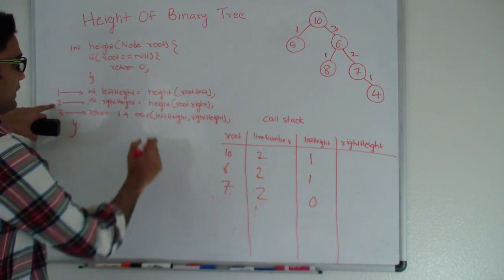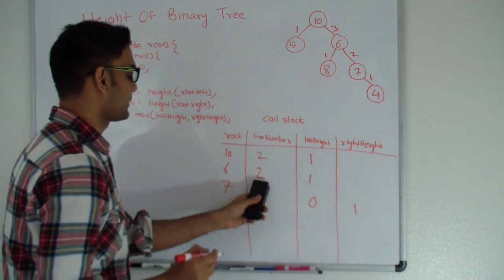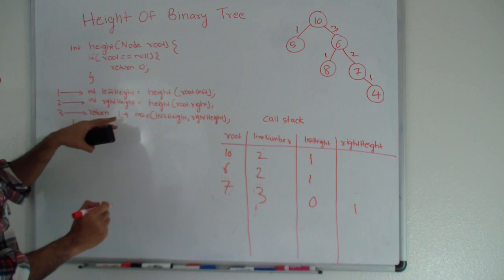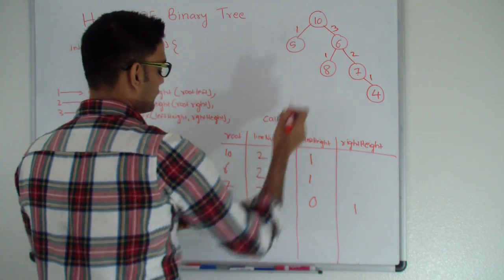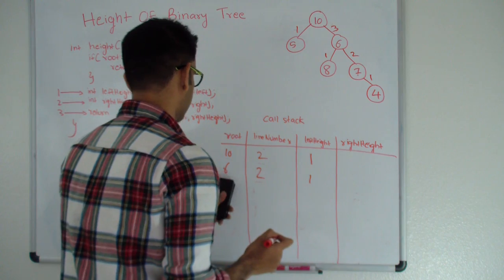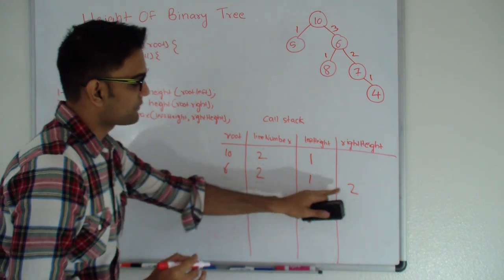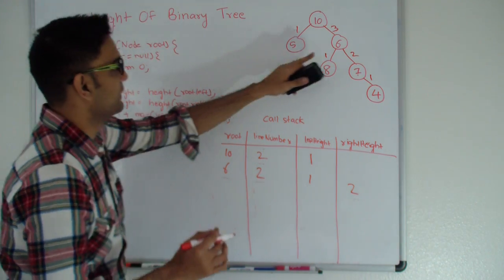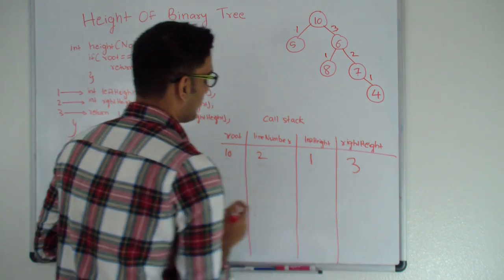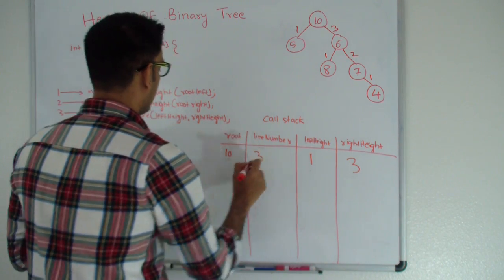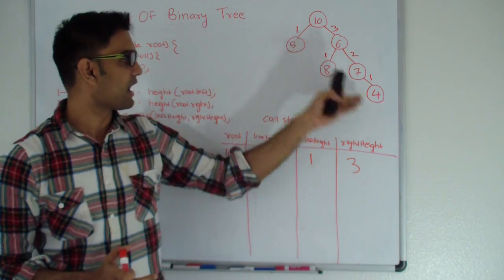In 7 we were at line number 2, so right height is set to 1. We already have left height 0 and right height 1. So 7 executes line number 3: 1 plus max of left and right is 2. So 7 returns 2 to 6. We were at line number 2 for 6, so right height is set to 2. Then 6 returns max of left or right plus 1, which is 3. So 6 returns 3 to 10. We were at line number 2 for 10, right height is set to 3. Then 10 executes line number 3: 1 plus max of left and right is 4. So 10 returns 4 to the calling function, which is the height of this binary tree.